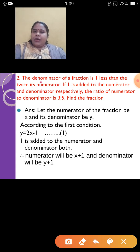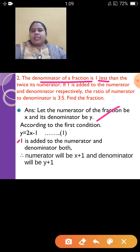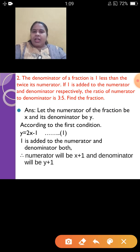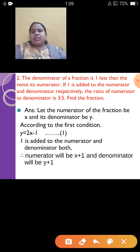Let us read the first part: the denominator of a fraction is 1 less than twice its numerator. Denominator is y. Y is 1 less — so minus 1 — from twice its numerator. Numerator is x, so twice will be 2x. Therefore: y = 2x − 1. That is equation number 1.